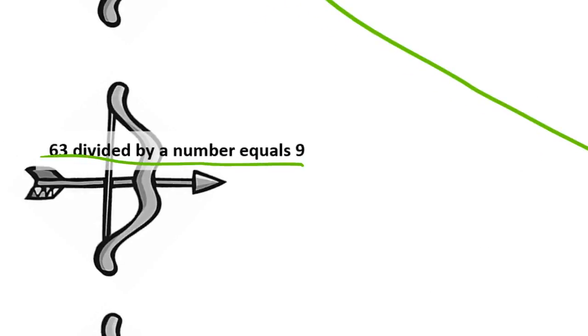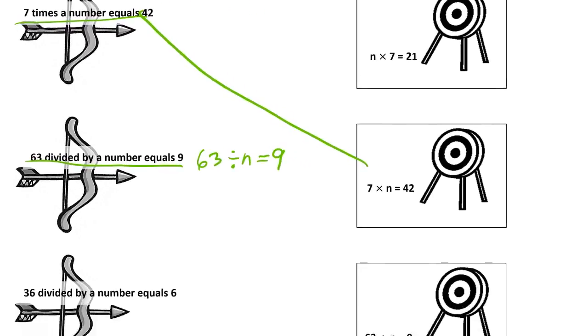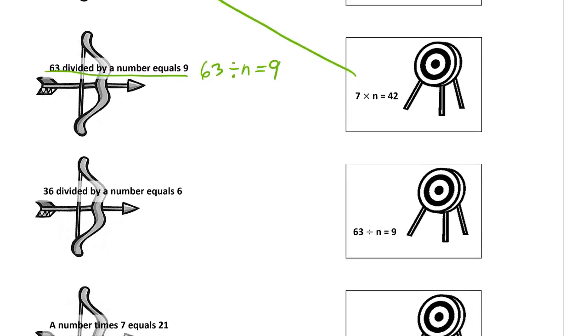63 divided by a number equals 9. Well, how do you write that in a number sentence? 63 divided by a number—we'll just reuse n for a number—and it equals 9. So where do we see that one? Here it is.